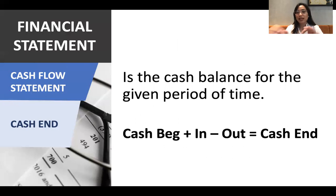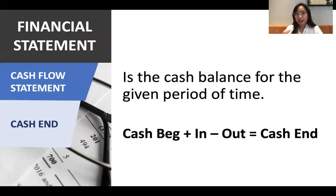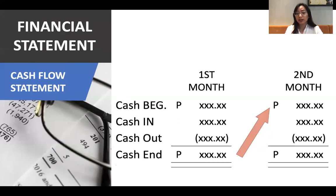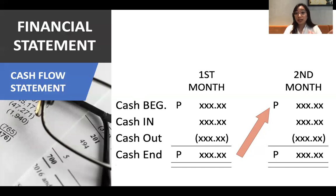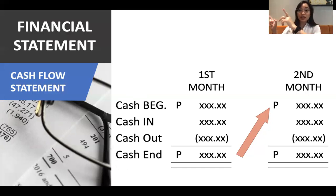The cash balance formula for a given period is: cash beginning plus cash in, minus cash out, equals cash ending. Financial statements are usually done monthly, except for the balance sheet which is typically yearly. The cash ending of one period becomes the cash beginning of the next month. For example, if your cash ending is 10,000 pesos, that 10,000 becomes your cash beginning for the second month.